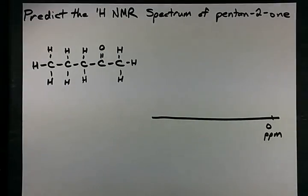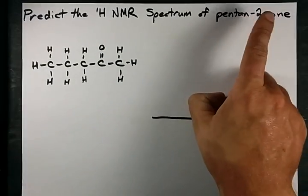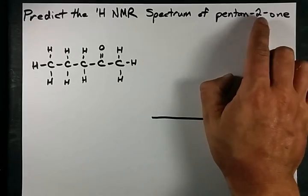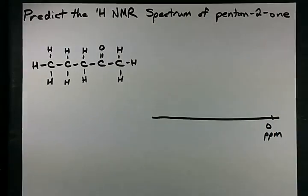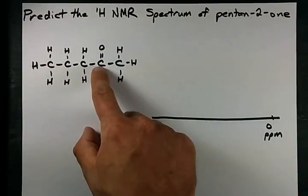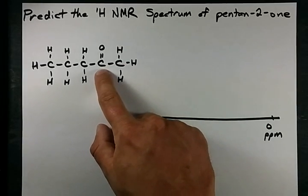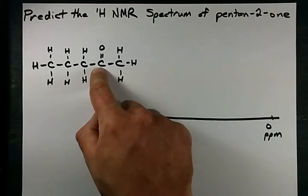Together we're going to predict the 1H NMR spectrum of 2-pentanone or pentan-2-one as it's officially called. That's five carbons all single bonded to each other with a double bonded oxygen on the second carbon in the chain.